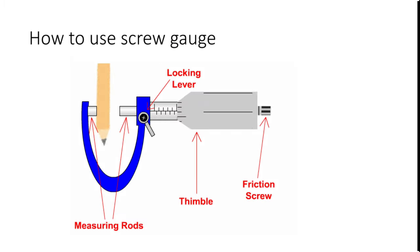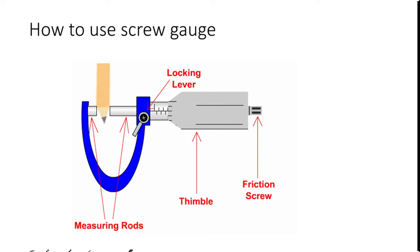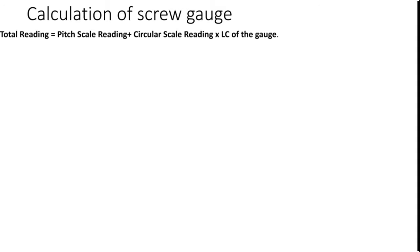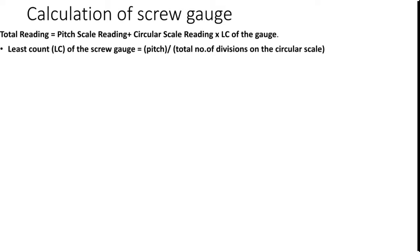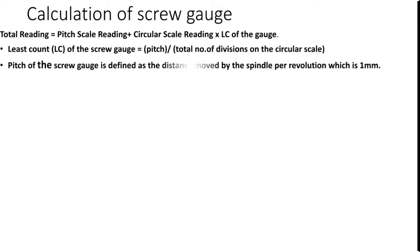How to use screw gauge? This is the way how we should use it. Calculation of screw gauge: total reading equals pitch scale reading plus circular scale reading multiplied by least count. Least count of the screw gauge equals pitch divided by total number of divisions on the circular scale. Pitch of the screw gauge is defined as the distance moved by the spindle per revolution, which is 1 mm. So, least count of screw gauge equals 1 mm divided by 100, which is equal to 0.01 mm.